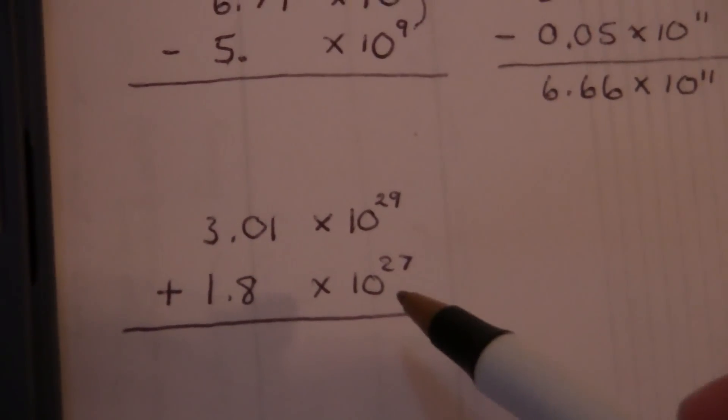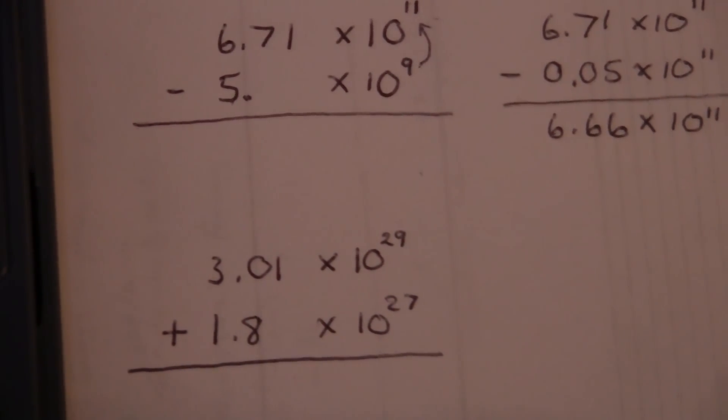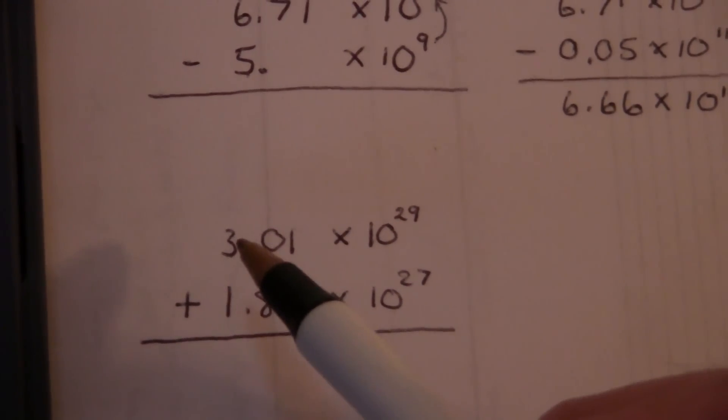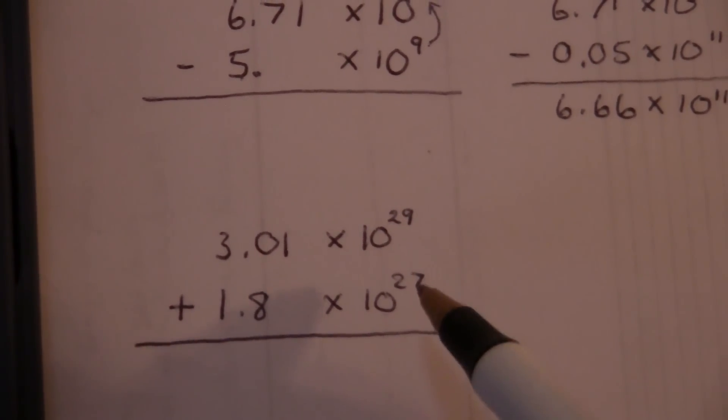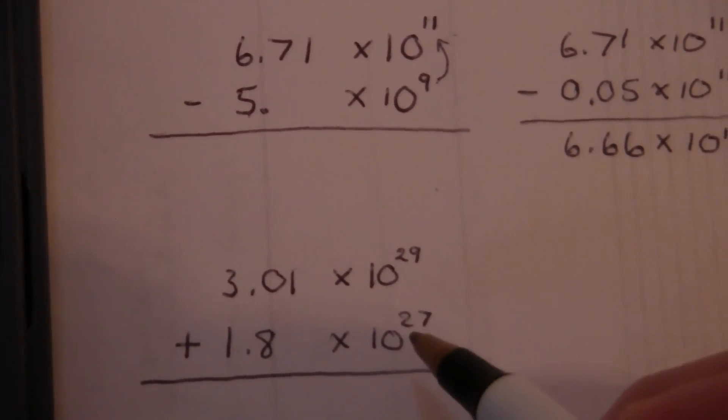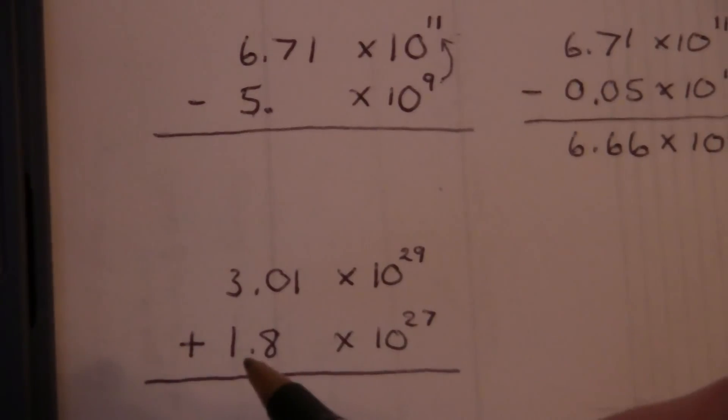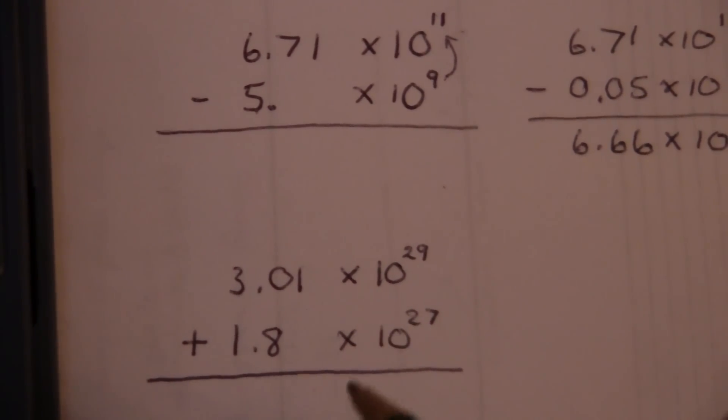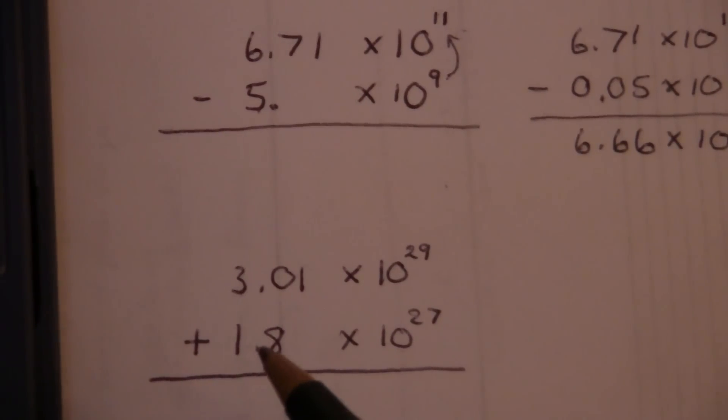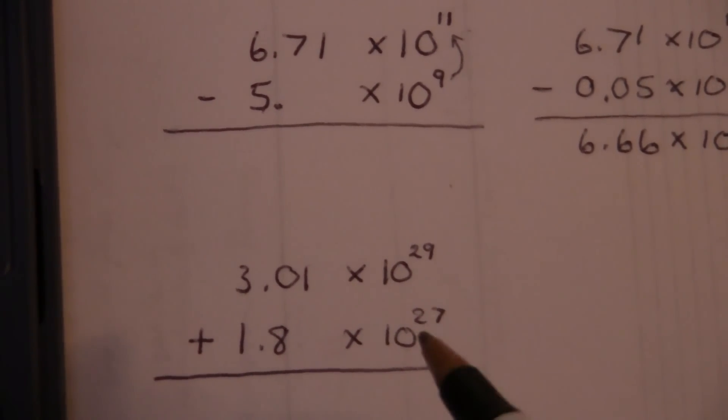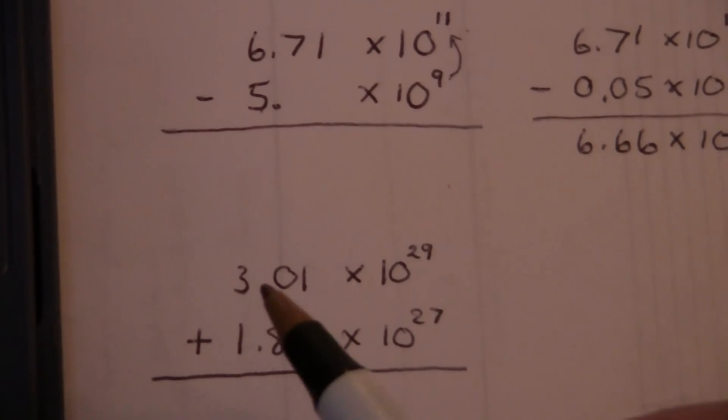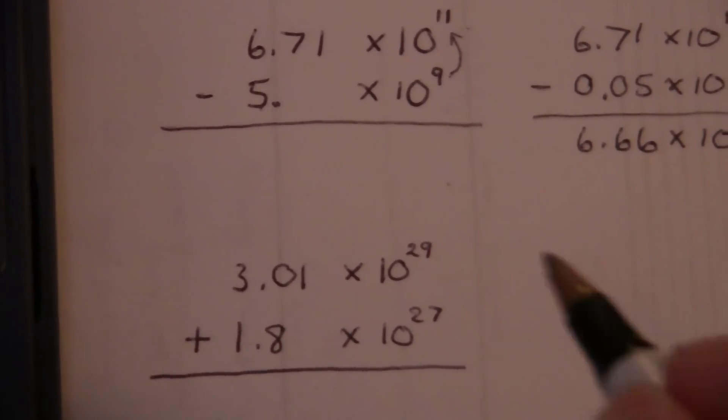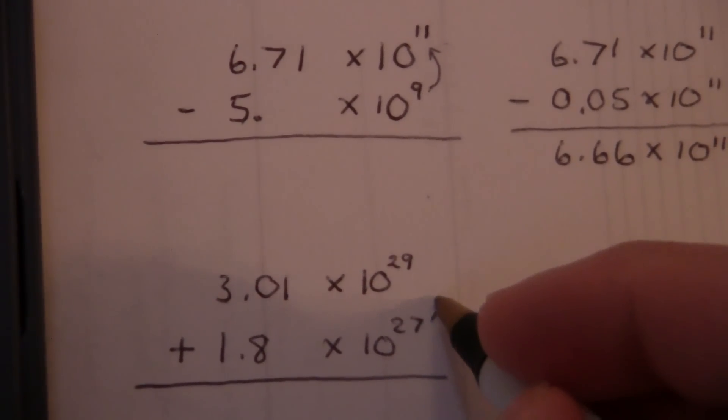One more example. Even larger numbers. Same principle in all of these cases. We're going to align the powers of 10. That's the same as aligning the decimal. They're not the same until we get these aligned, because this one has moved 27 places to the right, and this one has moved 29 places to the right.